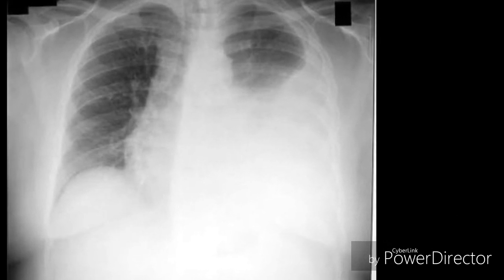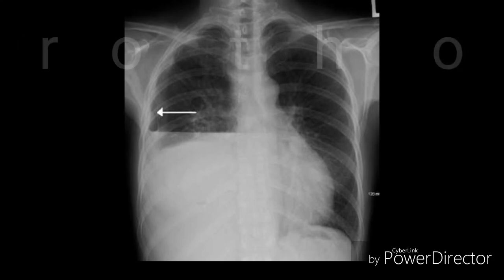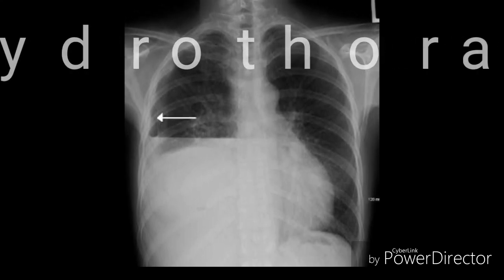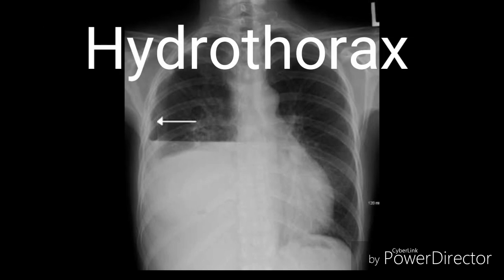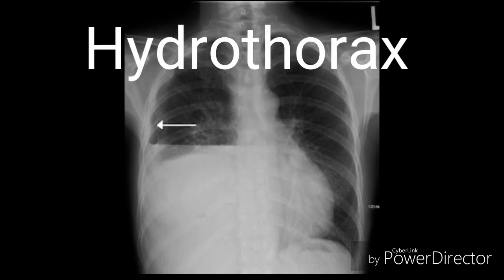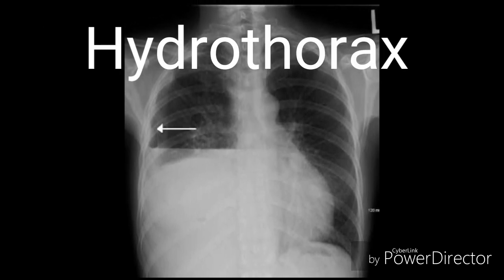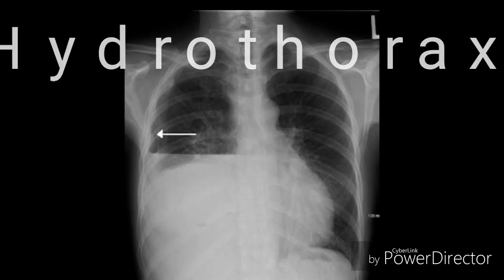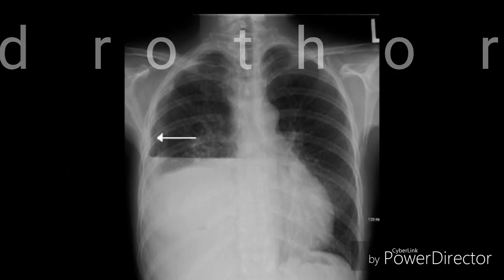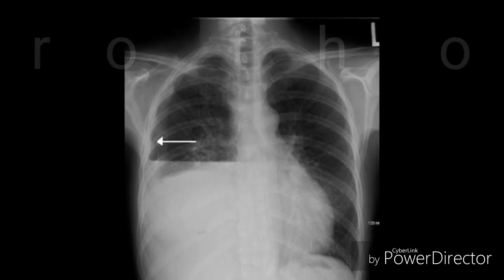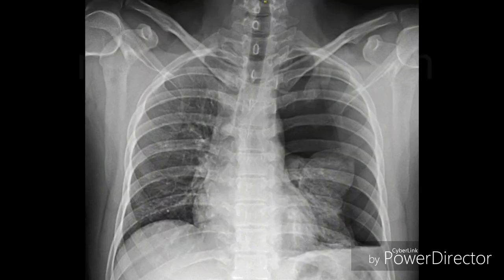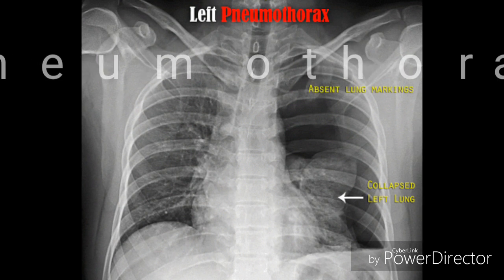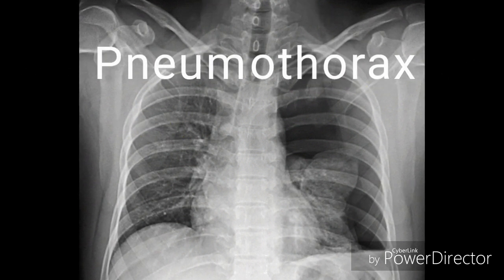Now here is an interesting chest X-ray of right-sided hydrothorax. In this chest X-ray you can observe a clear-cut horizontal line of demarcation between the fluid and the air. This is the X-ray of right-sided hydrothorax.